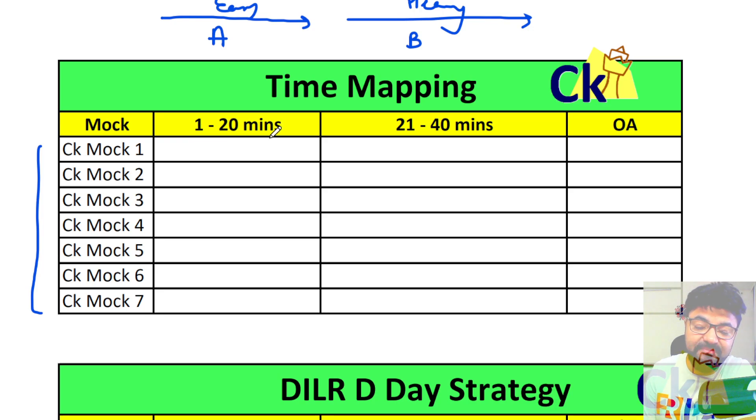...that in the first 20 minutes when you're doing the easy questions, you can solve up to 7 questions, but in the 21 to 40 minute period, you can only do 3 questions. This means you're wasting your time. An ideal scorecard should look like your performance is equal - either 5 and 5 attempts, or 4 and 4, or 6 and 6 - your attempts should be equal.